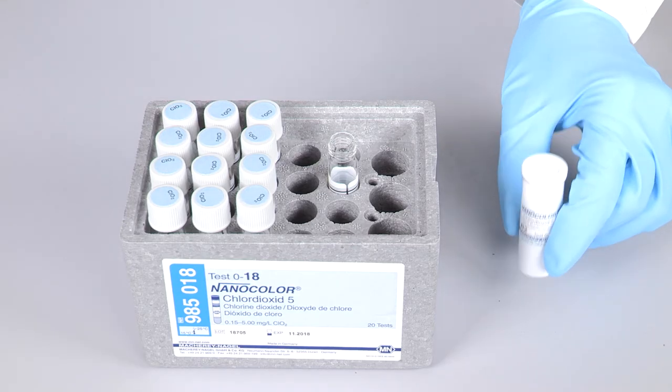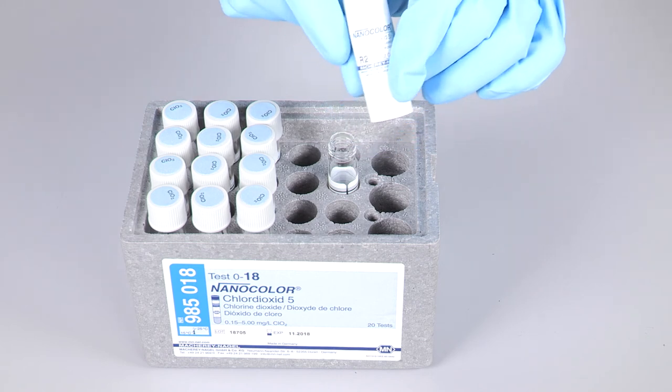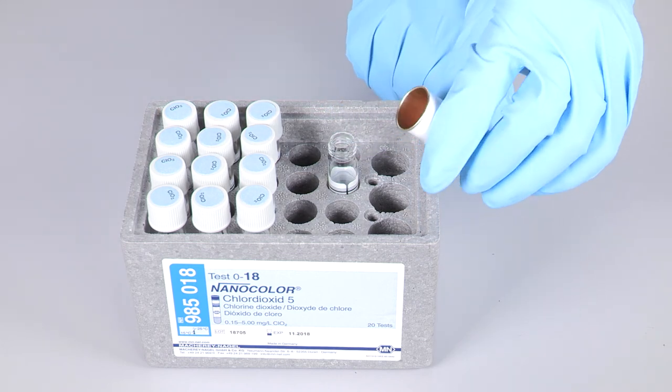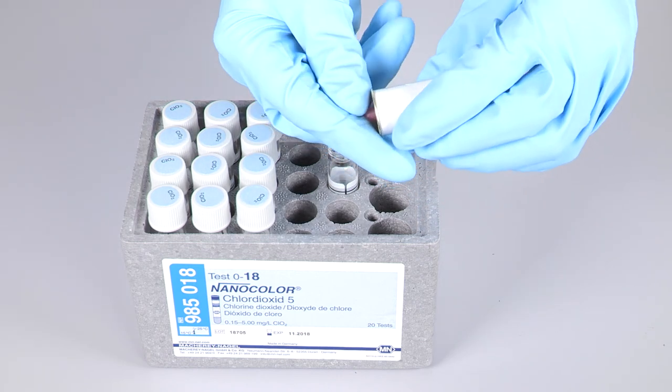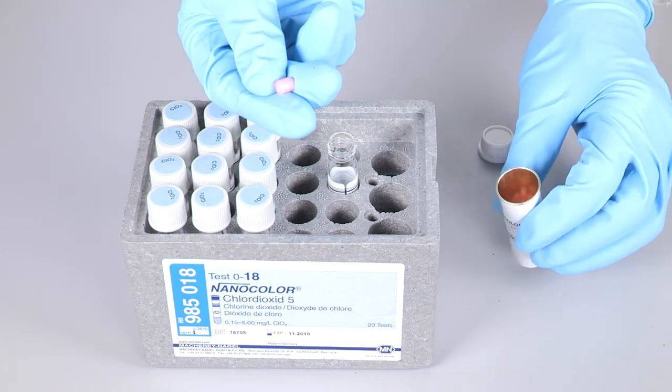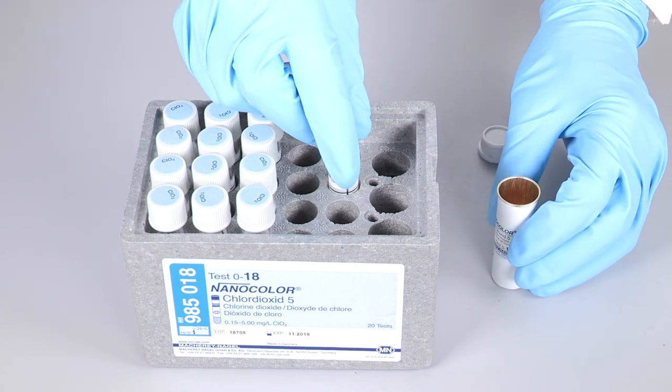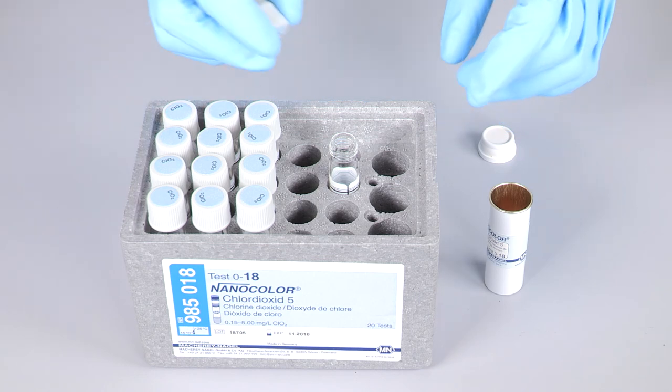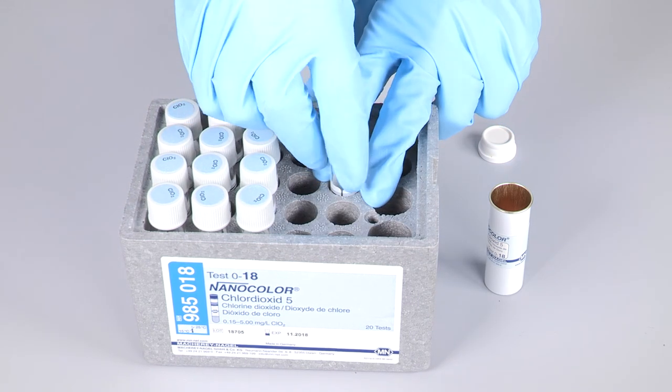As a next step we add the small tube called R2 into the cuvette and mix it with the sample by slowly turning it a few times. Ensure that there are no fingerprints on the outside of the cuvette or gas bubbles on the inside.